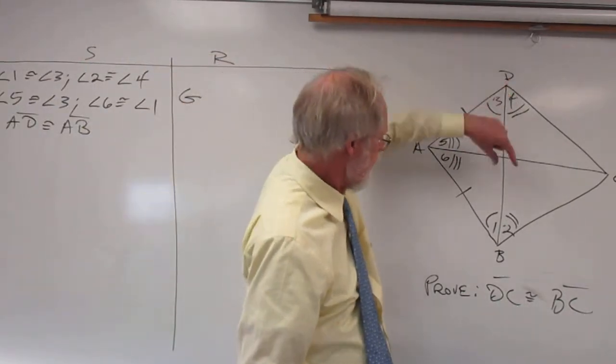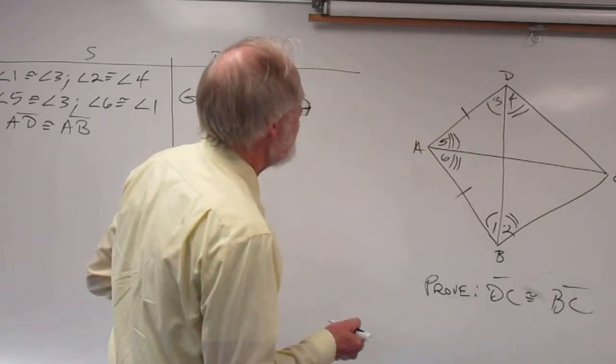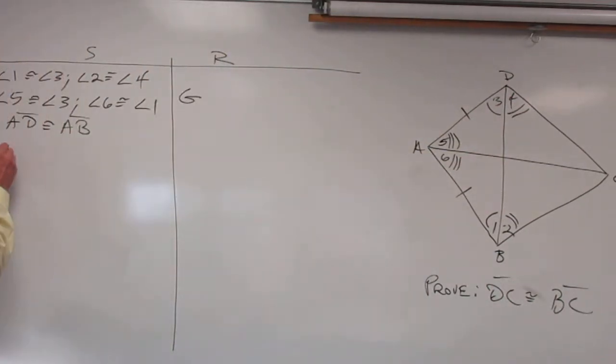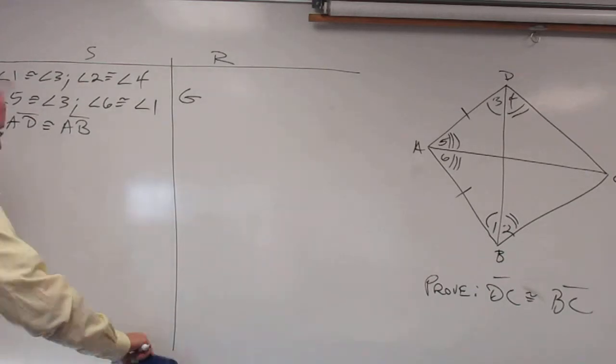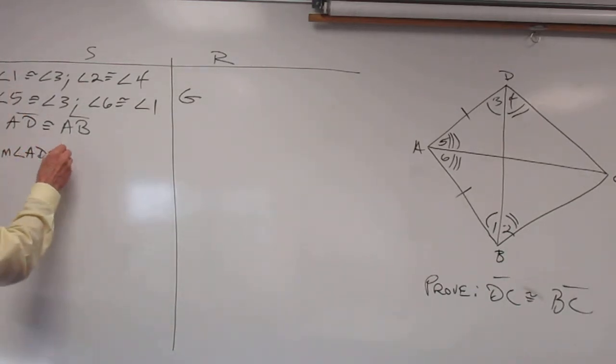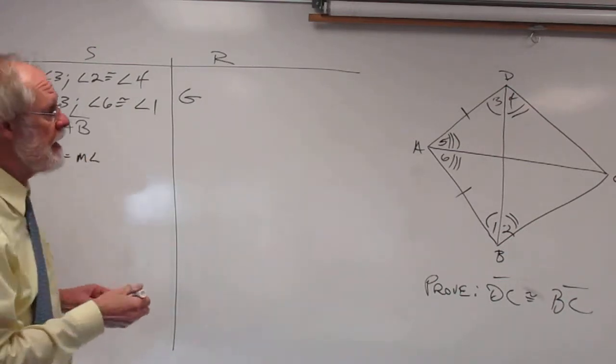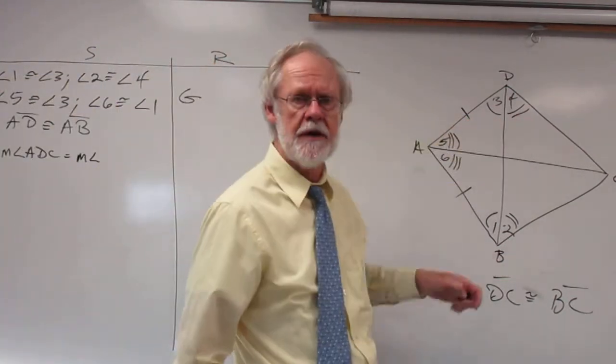The key is going to be these two angles right here. So let's say angle ADC is equal to, or we're going to have to use measure of because we're dealing with equals. So the measure of angle ADC is equal to the measure of angle 3 plus the measure of angle 4.